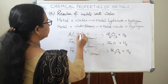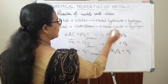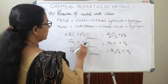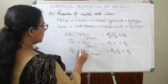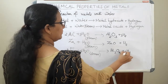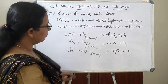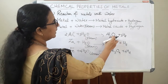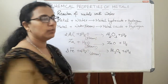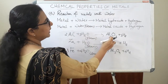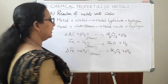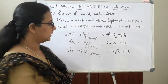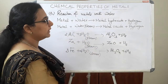We need to balance these equations. The balanced equation for aluminium is: 2Al + 3H₂O → Al₂O₃ + 3H₂. For zinc: ZnO + H₂O — no balancing needed. For iron: 3Fe + 4H₂O → Fe₃O₄ + 4H₂. Since water is used in the form of steam, we see the corresponding metal oxides. These three metals are less reactive and react only with steam, not with liquid water.